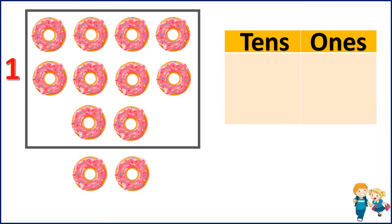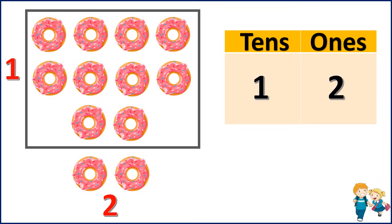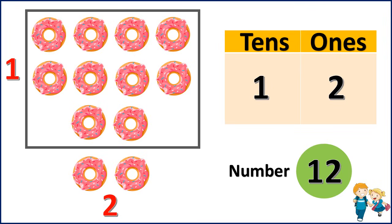Now let's count the remaining donuts: 1, 2. So here we have 2 donuts. So in the 10s place we have 1 ten, and in the 1s place we have 2. So the number is 12.